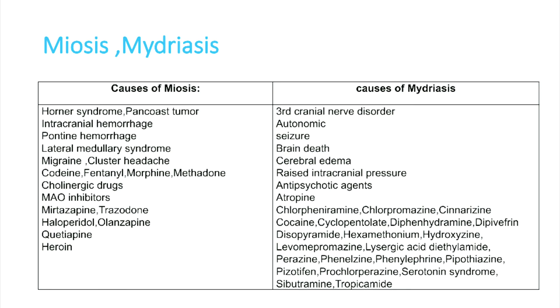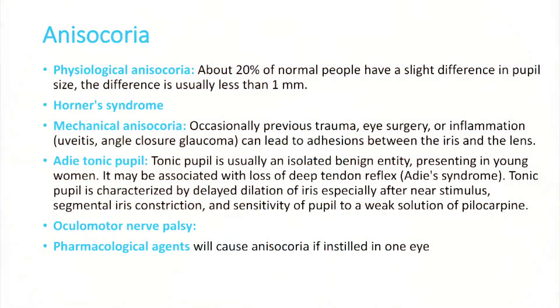Pupillary dilatation, or mydriasis, is seen in third cranial nerve palsy, autonomic seizures or dysfunction, brain death, cerebral edema, raised ICP, and when the patient is on atropine. When one eye is dilated and the other is constricted, this is called anisocoria.